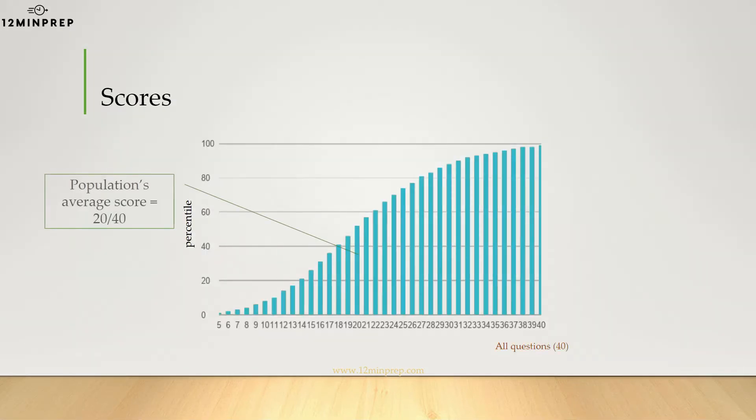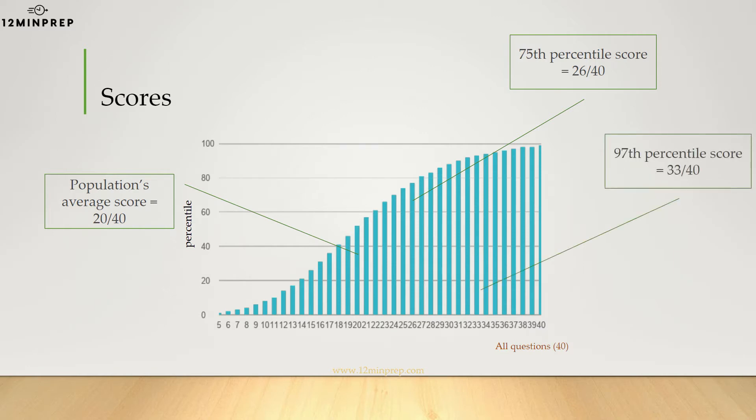The average score on the UCAT is around 20. A score of 26 is in the 75th percentile, and a score of 30 is in the 90th percentile. A score of 33 is in the 97th percentile. Your target score will depend on the position you are applying for, as certain positions may require higher scores than others.